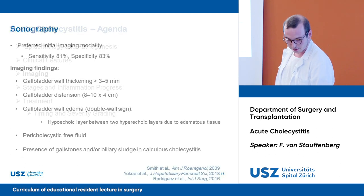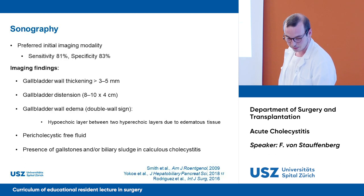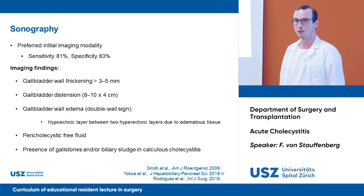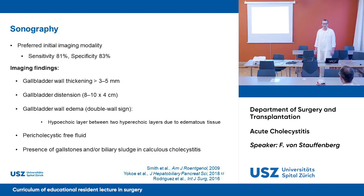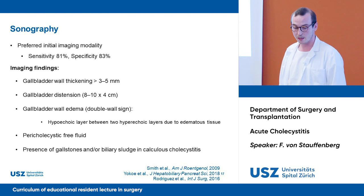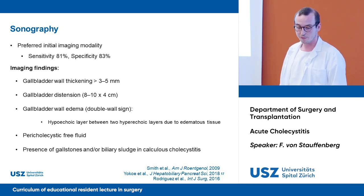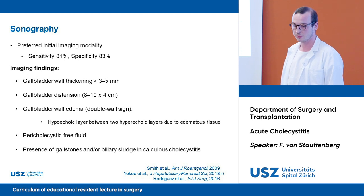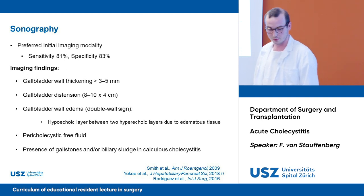For imaging, we use mainly sonography. It is the preferred initial imaging modality with a sensitivity of 81 percent and a specificity of 83 percent. In imaging we would find gallbladder wall thickening, distension, a double wall sign due to wall edema, pericolecystic free fluid, as well as the presence of gallstone or sludge in calculous cholecystitis.